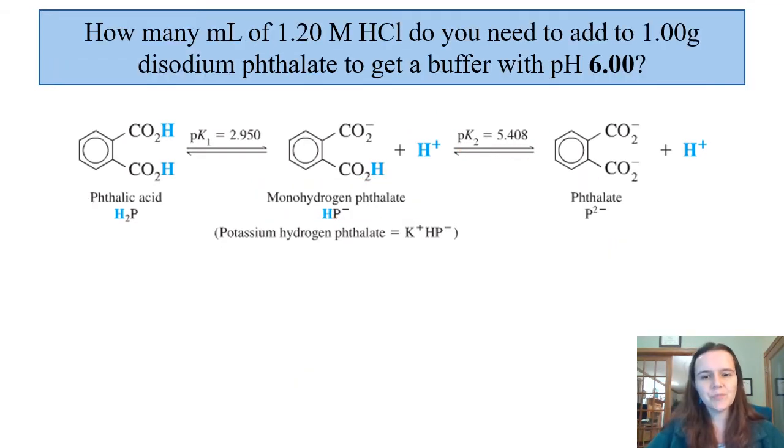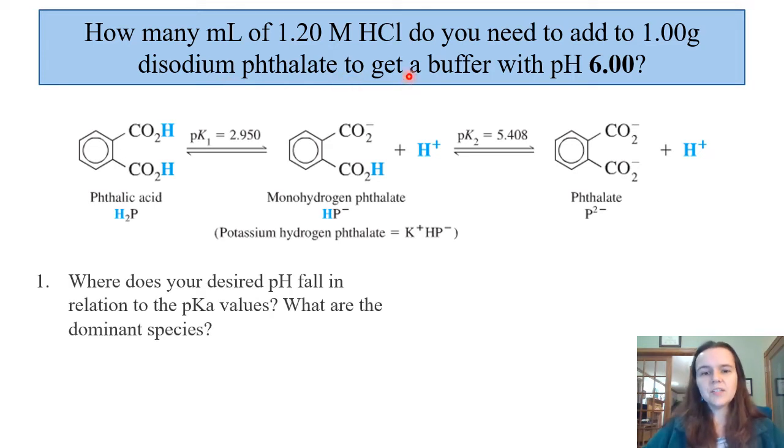Now most of our questions for polyprotic acids and bases are not going to be so easy as being given moles of everything involved. In this example question, we're asking ourselves how many milliliters or what volume of 1.2 molar HCl, a strong acid, would be needed to add to one gram of disodium phthalate to get a buffer of pH 6.00. The first thing that we need to do is figure out where this desired pH of 6.0 falls in relation to the pKa values of 2.95 and 5.408 for the respective proton losses of this diprotic acid, and then figure out what the dominant species are present.